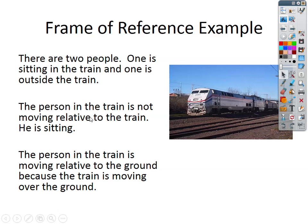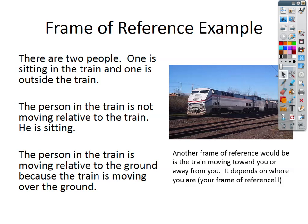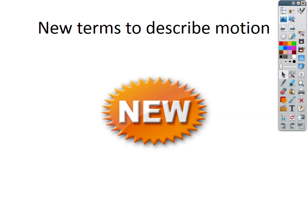There are two people: one is sitting in a train and one is outside the train. The person in the train is not moving relative to the train — he is sitting. The person in the train is moving relative to the ground because the train is moving over the ground — that was my car example. So motion means an object has changed its position based on your frame of reference.